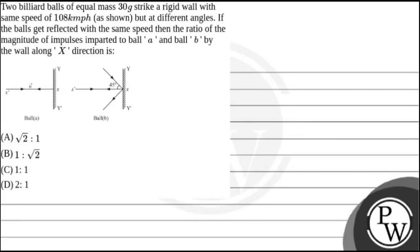Hello, let's read this question. The question says two billiard balls of equal mass 30 grams strike a rigid wall with same speed of 108 km per hour as shown in figure but at different angles. If the balls get reflected with the same speed, then the ratio of the magnitude of impulses imparted to ball A and ball B by the wall along X direction is. And our options are root 2 is to 1, B 1 is to root 2, C 1 is to 1, and D 2 is to 1.